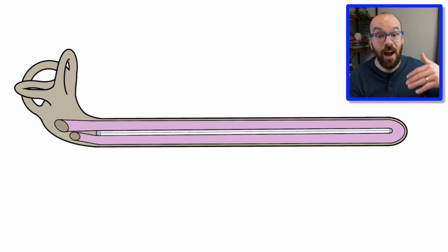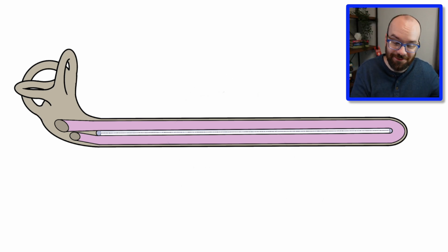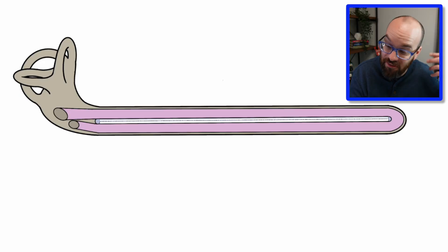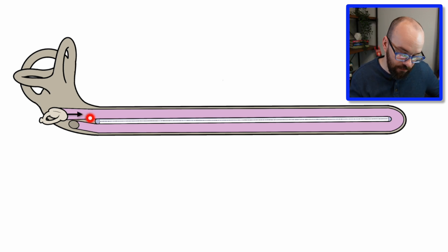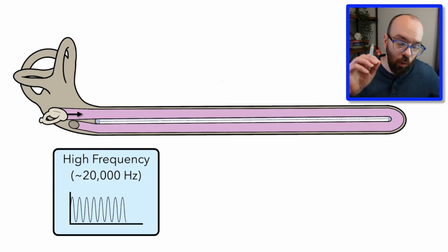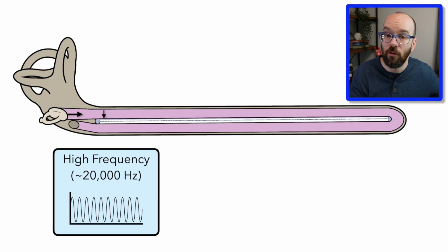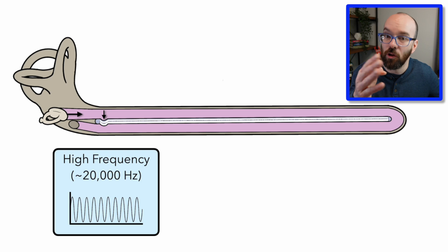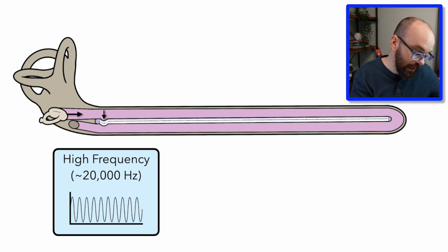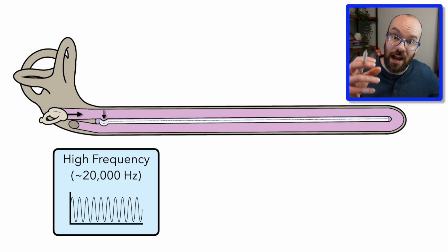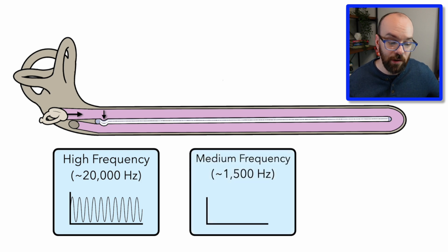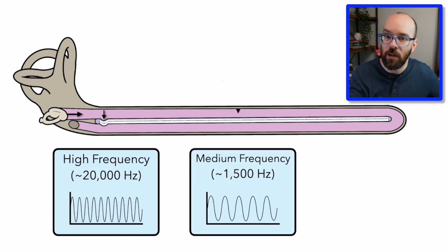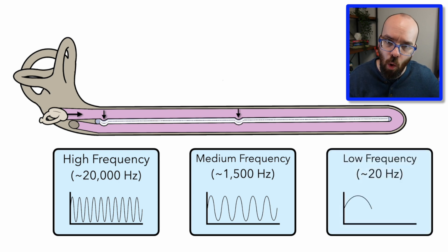The cochlea needs to detect different pitches — high sounds versus low sounds. When the stapes pushes in, it sends a signal that causes a standing wave in different regions of the cochlea. High-frequency sounds are detected at the proximal or beginning part of the cochlea, where vibrations are very fast. Medium frequencies are detected in the middle section. Low-frequency sounds are detected at the distal or end of the cochlea, where vibrations are slower.